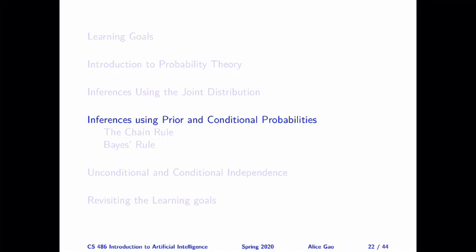That's everything for this video. Let me summarize. In this video, I talked about two ways of performing inference using the joint probability distribution. After watching this video, you should be able to calculate the probability over a subset of the variables using the sum rule given the joint distribution, and calculate a conditional probability using the product rule given a joint distribution. Thank you for watching. I will see you in the next video. Bye for now.